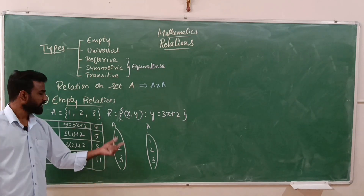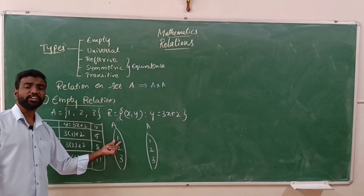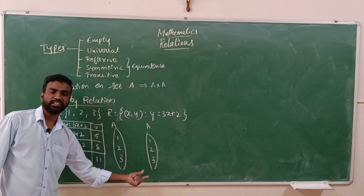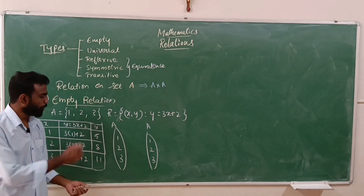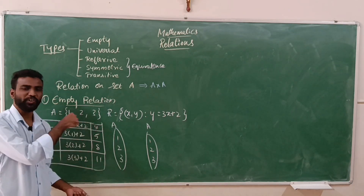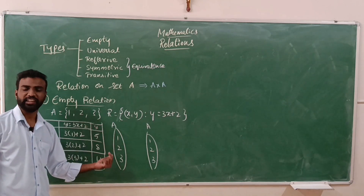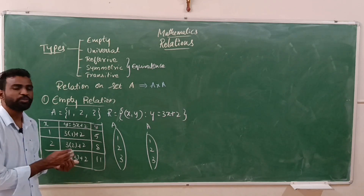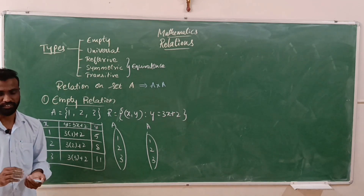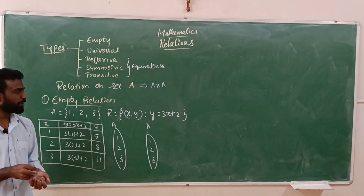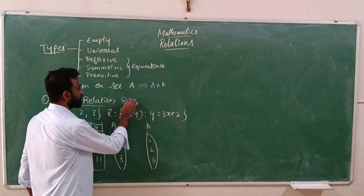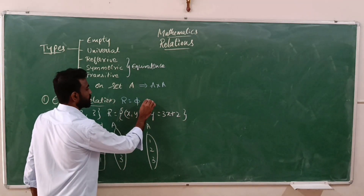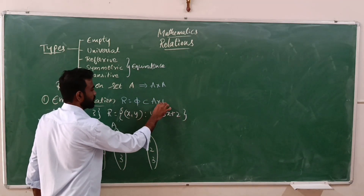What is happening here is that no element of set A is relating with any element of set A. This type of relation is called empty relation — there is no relation existing between any elements. Mathematically, it can be written as R is equal to the null set, which is a subset of A cross A.